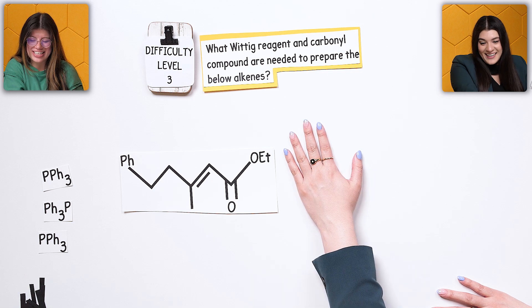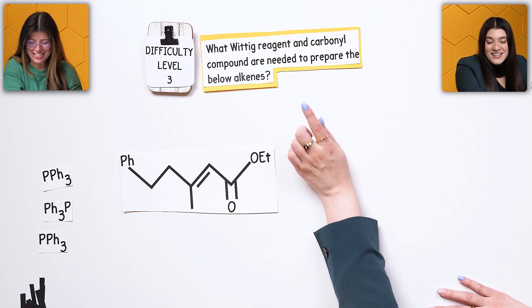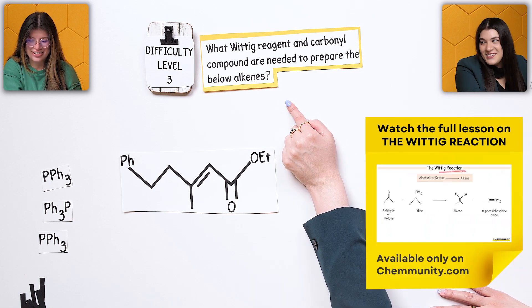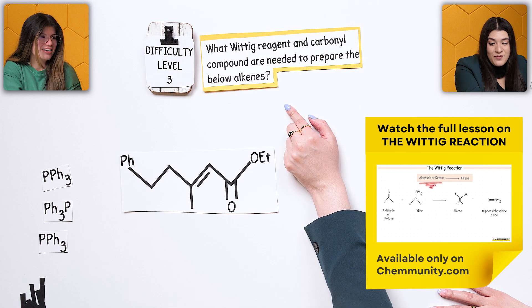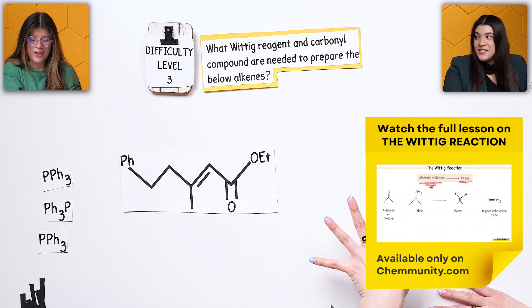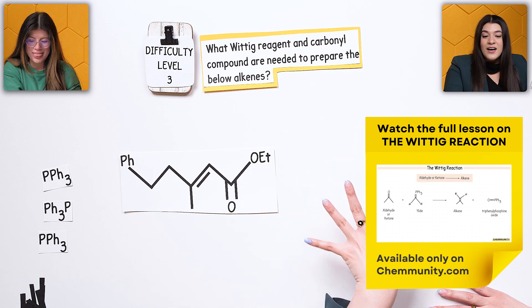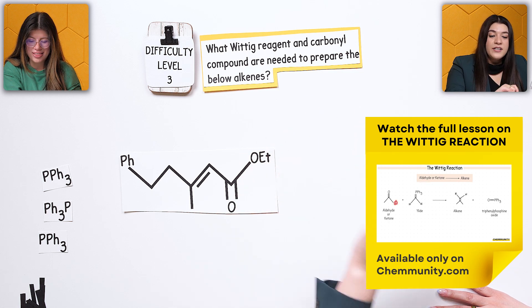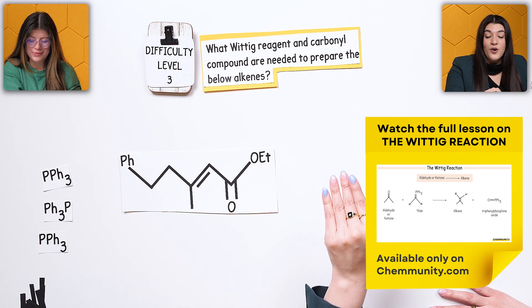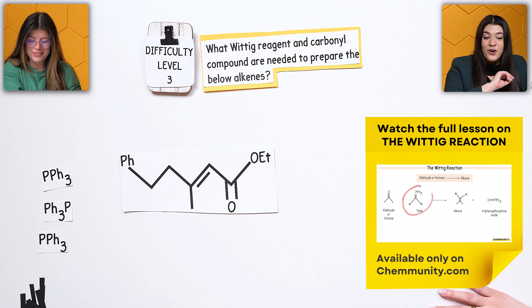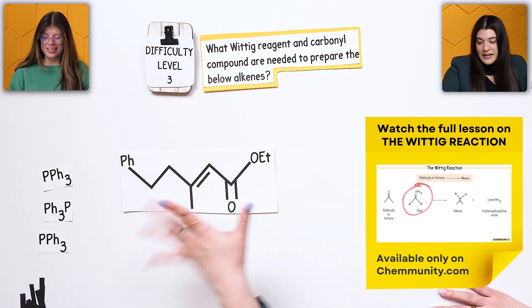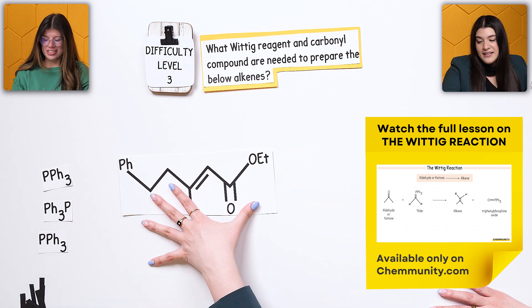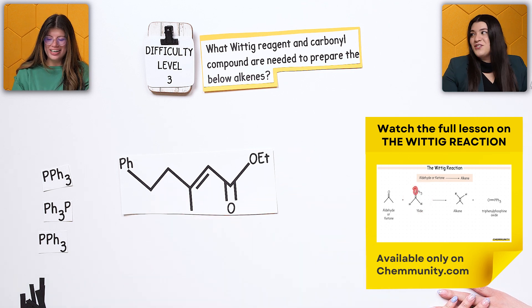Difficulty level three — we're back to a Wittig reaction retrosynthesis. We're told what Wittig reagent and carbonyl compound are needed to prepare the given alkene. What would you do?